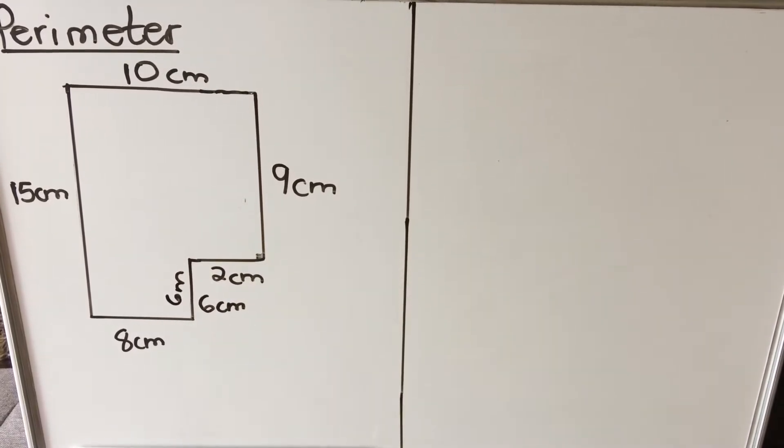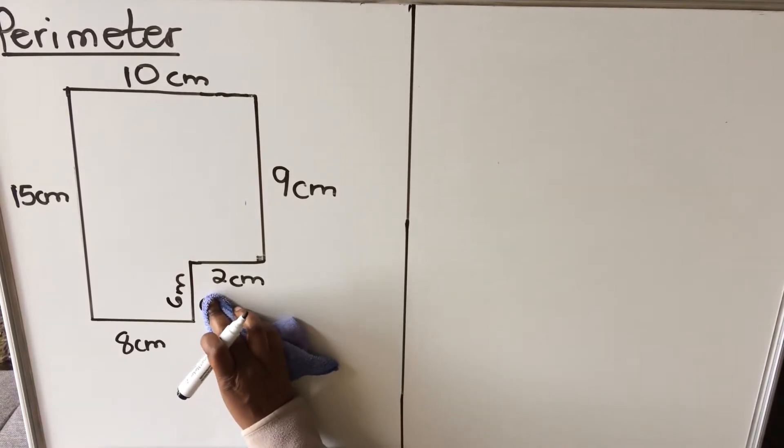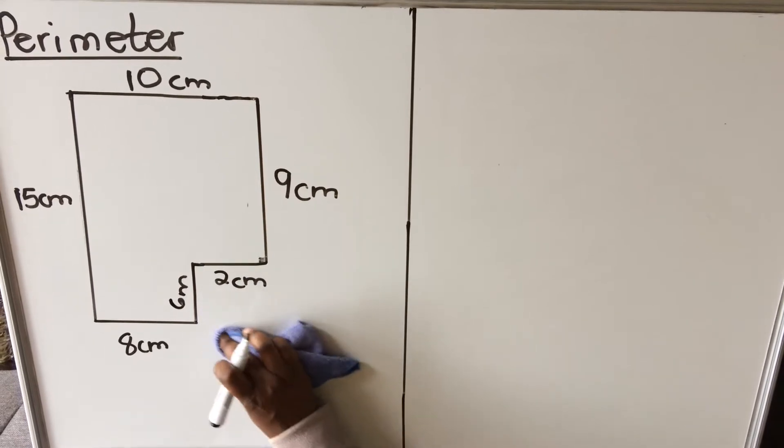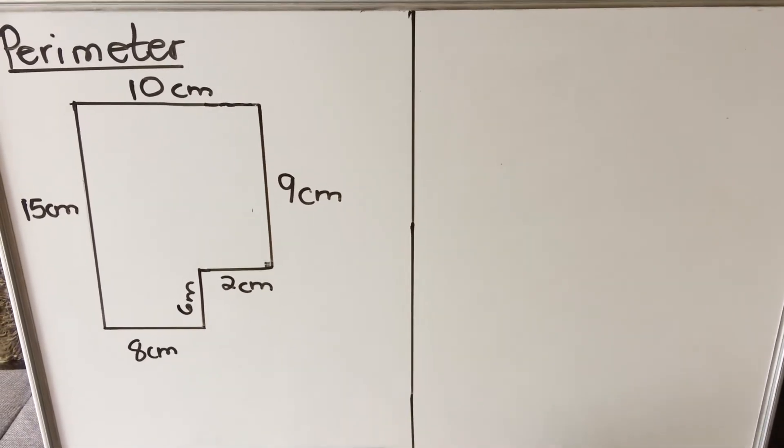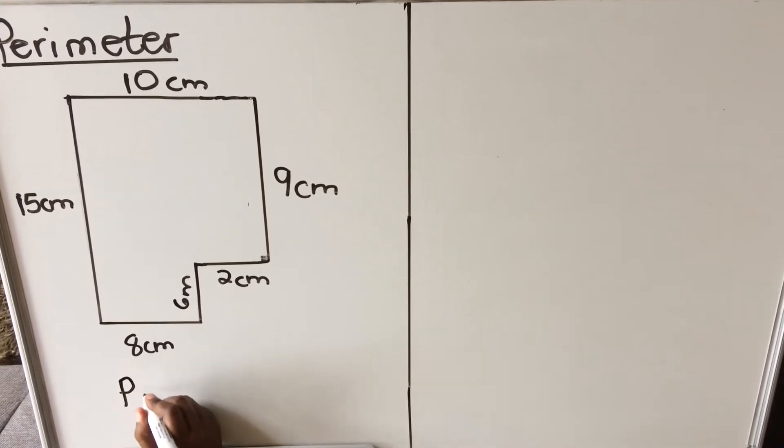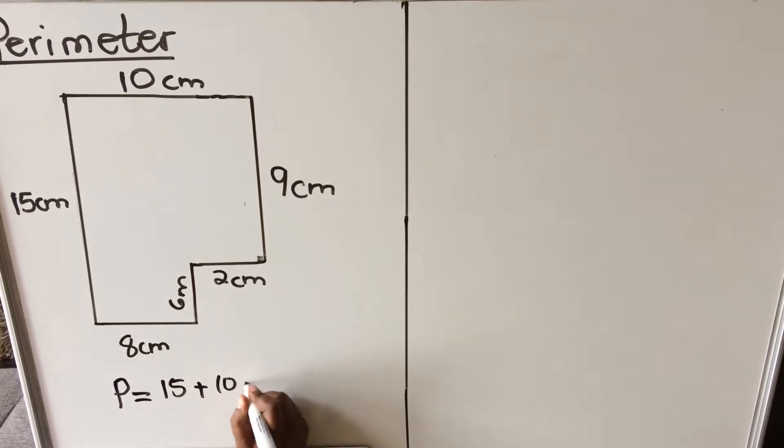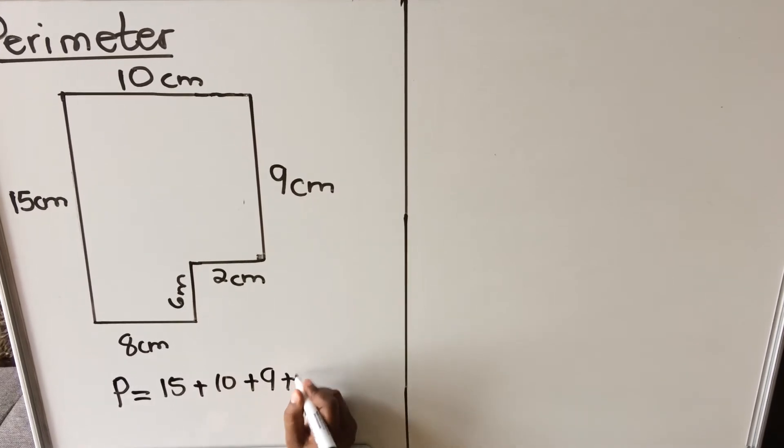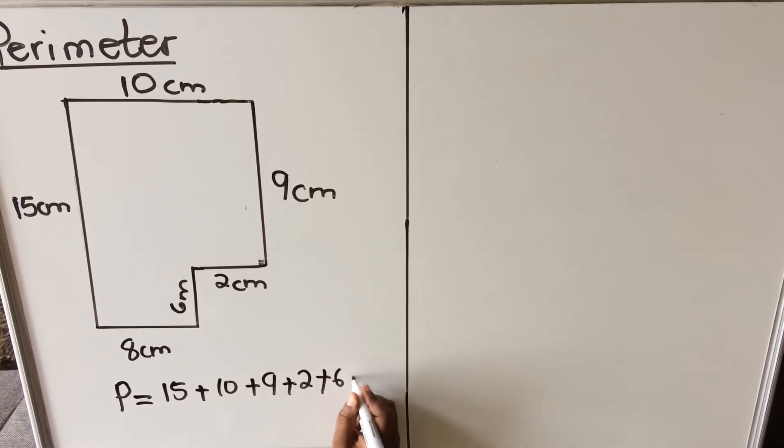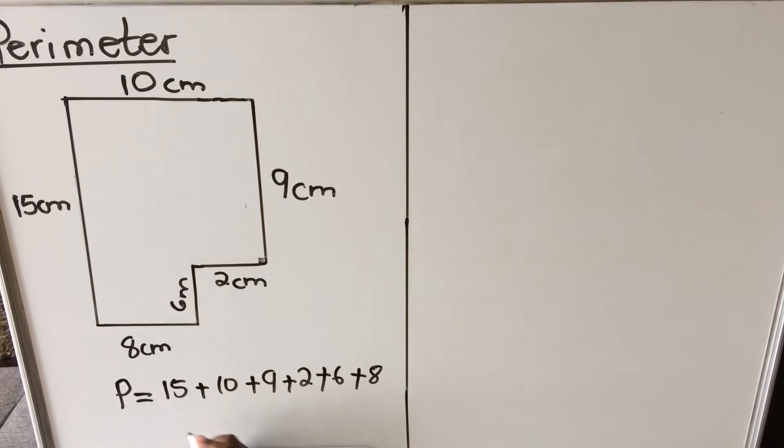So we have all the values around the object, so we can calculate the perimeter. This is equal to 15 plus 10 plus 10 plus 9 plus 2 plus 6 plus 8.